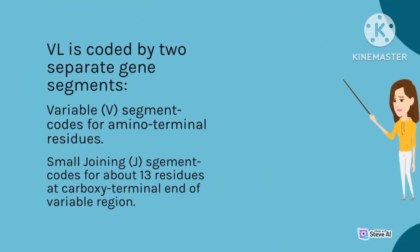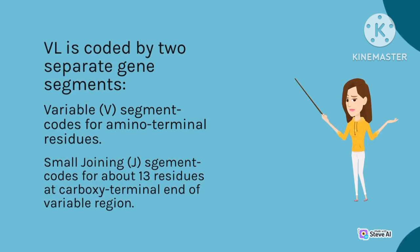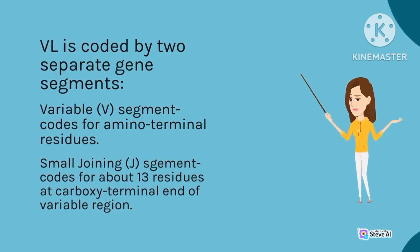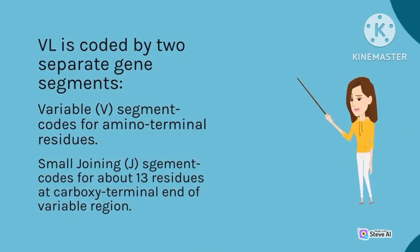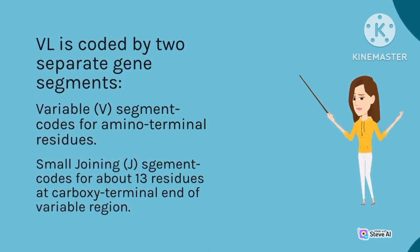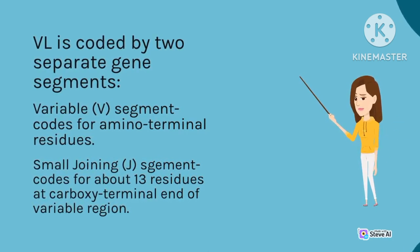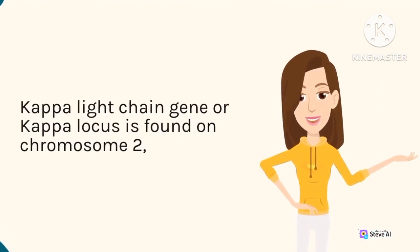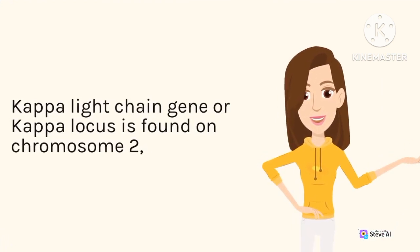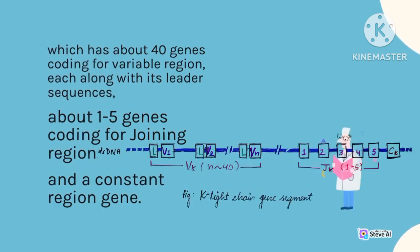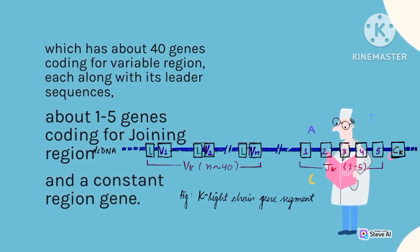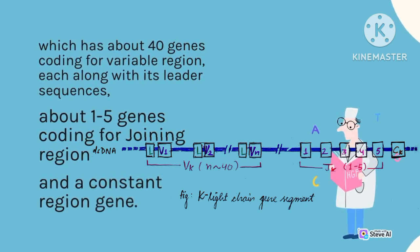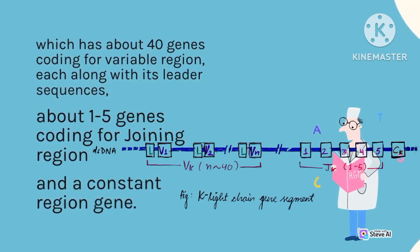VL is coded by two separate gene segments. The variable (V) segment codes for amino-terminal residues. The small joining (J) segment codes for about 13 residues at the carboxy-terminal end of the variable region. The kappa light-chain gene, or kappa locus, is found on chromosome 2, which has about 40 genes coding for the variable region, each along with its leader sequences, about 1 to 5 genes coding for the joining region, and a constant region gene.